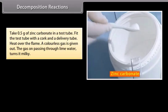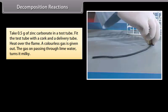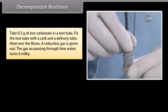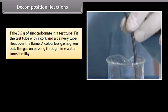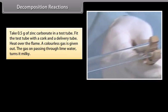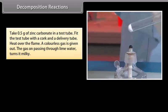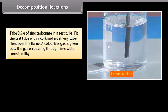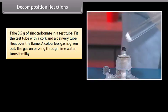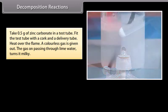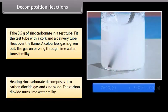Zinc carbonate decomposition: Take 0.5 grams of zinc carbonate in a test tube fitted with a cork and delivery tube. Heat over a flame — a colorless gas is given out. The gas turns lime water milky when passed through it. Heating zinc carbonate decomposes it to carbon dioxide gas and zinc oxide. The carbon dioxide turns lime water milky.